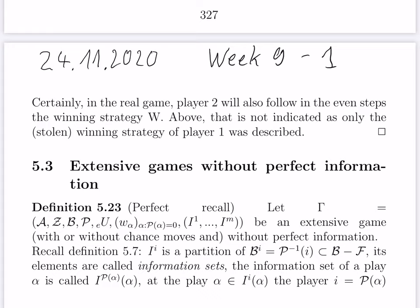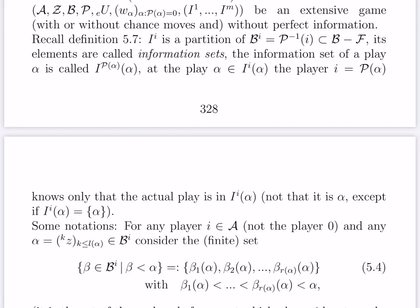The interpretation is as follows. At play alpha, player i — player P(alpha) — does not know that he is at play alpha. He knows only that he is at some play in the information set I^i(alpha). He knows exactly where he is only if this set consists of a single element, which is the special case of perfect information. Without perfect information means at least one information subset contains more than one element.